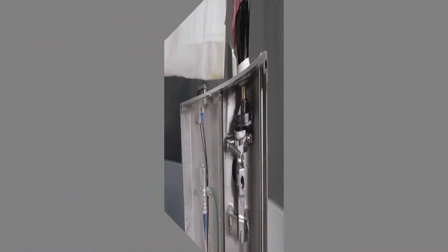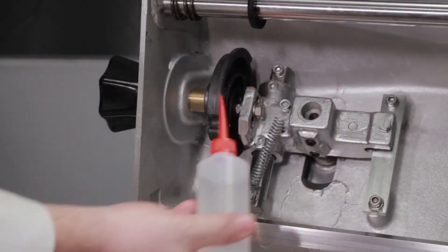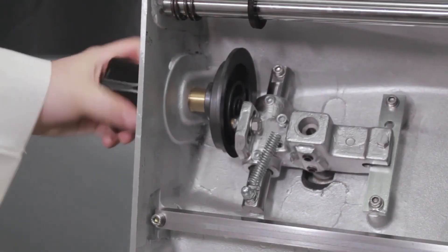On a monthly basis, a few drops of mineral oil should also be applied to the black cam. Turn the thickness control dial back and forth to distribute the oil.